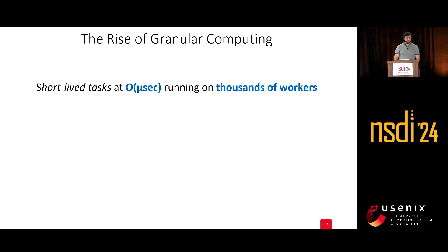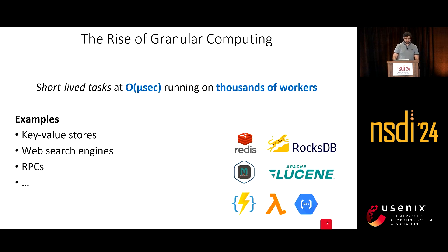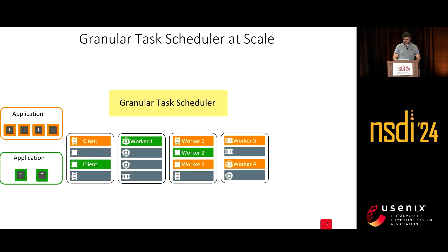There are many examples representing this granular computing paradigm — things like key-value stores, web search engines, RPCs, and so on. One of the main components for running the whole system is the task scheduler.